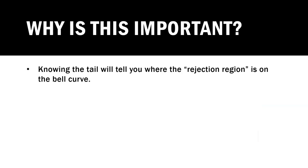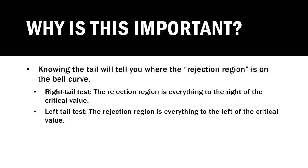Why is any of this important? Knowing the tail allows us to know where the rejection region is going to be on our bell curve. If it's a right-tailed test, anything to the right of your critical value is the rejection region. And if it's a left-tailed test, anything to the left of your critical value is your rejection region.